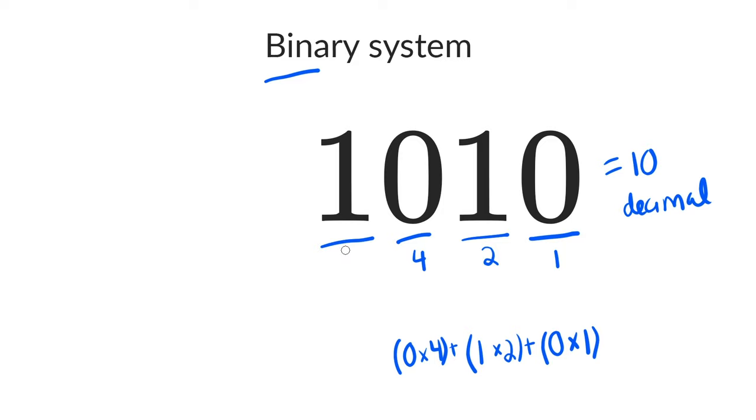Finally, this fourth bit here, this is the eights place and there's a one here. So we're going to multiply 1 times 8. Add that to everything else, we end up having 8 plus 2, which equals decimal 10.